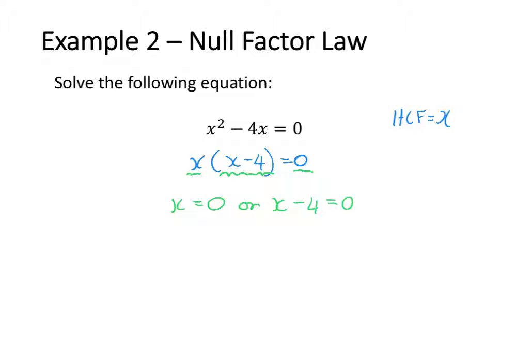Now that I've applied the null factor law, I can work out my values for x. My first value I already know, which is x equals zero. Or x minus 4 equals zero, which means x is going to equal 4. So when x squared minus 4x is equal to zero, x is going to equal zero or x is going to equal 4.